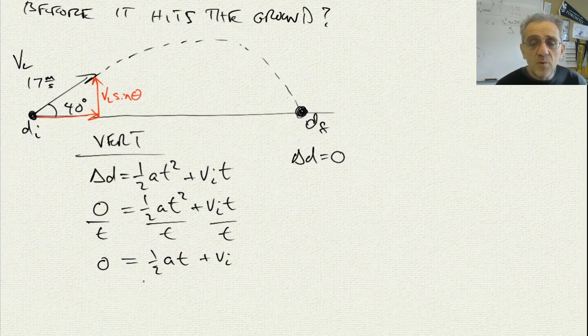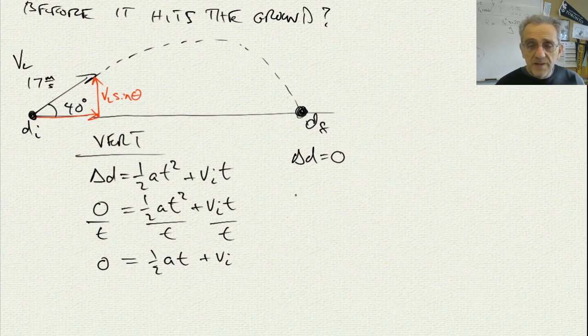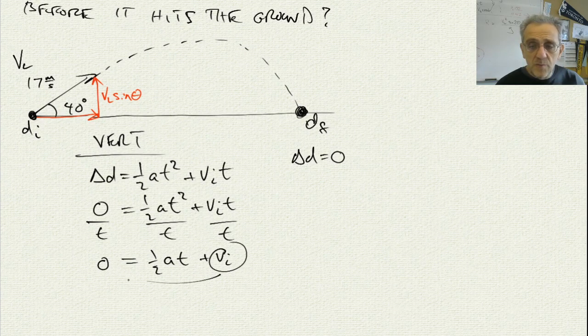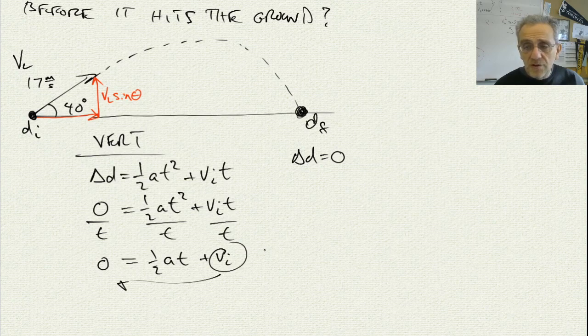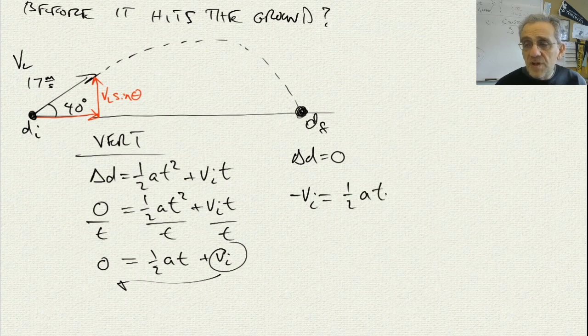And now, I'm going to solve for T. So, let's do that. Let's write out the equation. I'm going to take this term here and move it to the other side. So, I'll just write it up here. I'll get negative VI equals 1 half AT. And then, I want to solve for T. So, I'll multiply both sides by 2 and divide by A. So, I get negative 2 VI divided by A equals T.